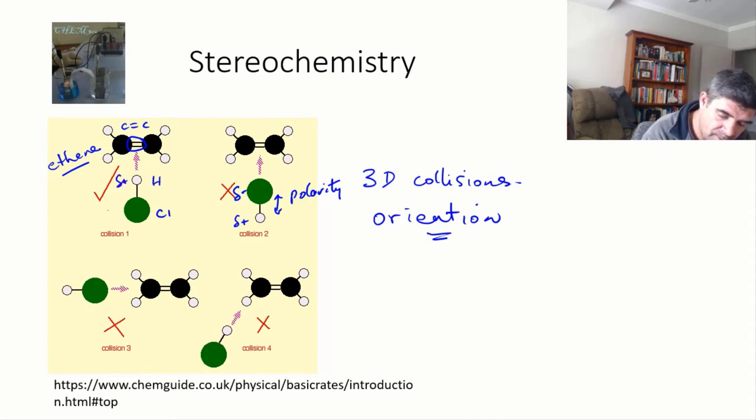Over here, slightly positive, slightly negative. You can see for the one that we've said will provide a successful collision reaction is where this very negative region of concentrated electrons is hit by this positive region where the hydrogen is coming in.